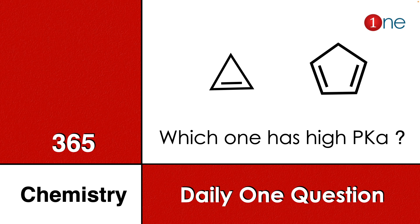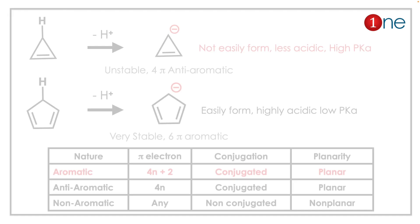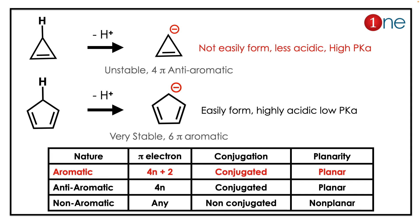Welcome to One Chemistry. This is the 365 Chemistry Series — one question daily. Here, two types of compounds are given and you have to find which one has a higher pKa. One system is a three-membered ring alkene system, and the other is a five-membered cyclopentadiene system. You have to find which one has higher acidity and which will have a high pKa.